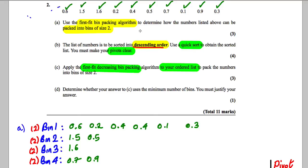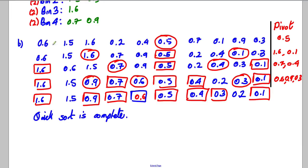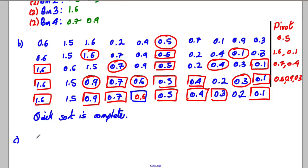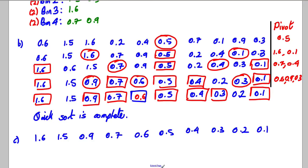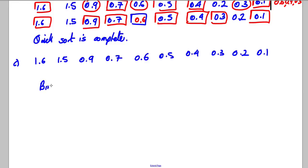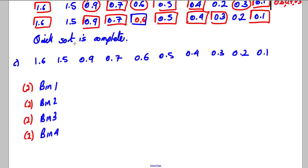Part C: apply the First Fit Decreasing bin packing algorithm to the ordered list from Part B to pack the numbers into bins of size 2. The first thing I'll do is write out the list in descending order: 1.6, 1.5, 0.9, 0.7, 0.6, 0.5, 0.4, 0.3, 0.2, 0.1. Then I set up bin 1, bin 2, bin 3, bin 4 — each of size 2, noted in brackets — and use this list to fill them.